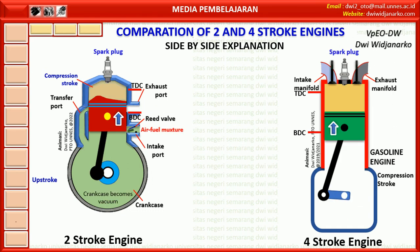When the piston reaches bottom dead centre, in the 4 stroke engine the intake stroke ends and the intake valve closes. The piston begins to move up and the compression stroke begins. In the 2 stroke engine, as the piston moves upward, the transfer port and exhaust port close. Above the piston, a compression stroke occurs where the air and fuel mixture is compressed so that the pressure and temperature rise. Below the piston, the upward movement causes the crankcase volume to expand so that the pressure drops and a vacuum occurs — the reed valve opens, and the air fuel mixture from the carburetor or fuel injection system enters the crankcase through the intake port.